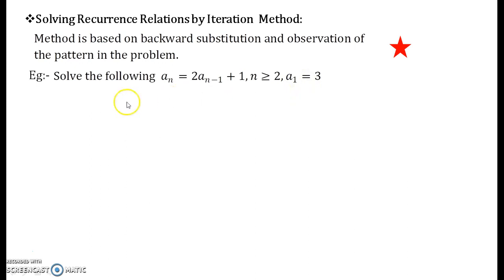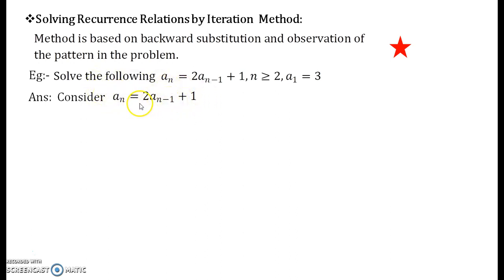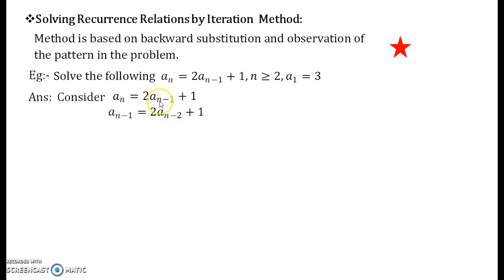Now consider the given recurrence relation. What you do is replace n by n minus 1. What you obtain is aₙ₋₁ on the LHS, and on the RHS you get 2 times aₙ₋₂ plus 1, because you just replace n by n minus 1 — so the term n minus 1 becomes n minus 1 minus 1, which gives you n minus 2.